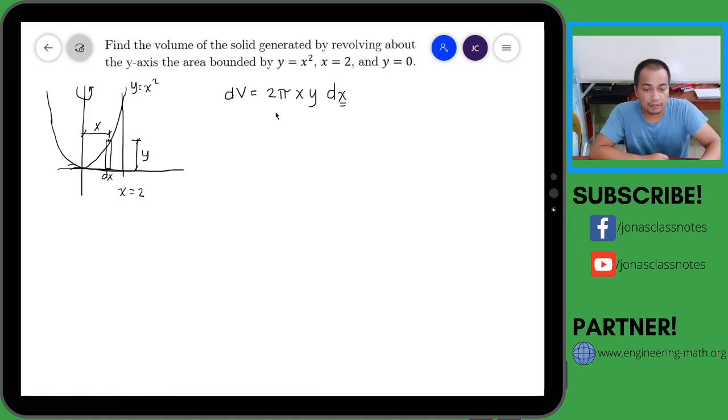So ang problema lang naman natin dito is actually y. We need to express y in terms of x because x is our variable of integration. Pero ano—kapag in-integrate natin ito, ano yung mga limits natin? Of course, magsisimula dito yung rectangle papunta dito. So what is the value of x dito? X equals 0. Dito x equals 2. So therefore the volume is the integral from 0 to 2 of 2πx, itong y is expressed in x is x squared, and then dx.